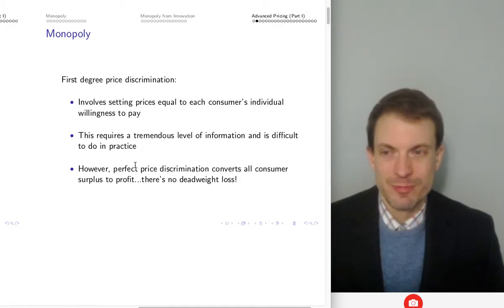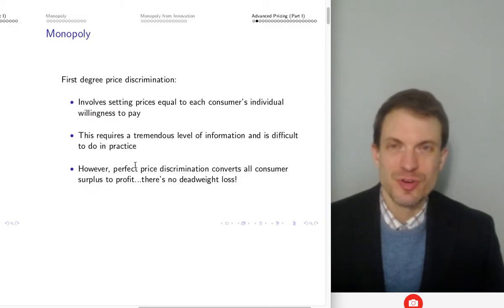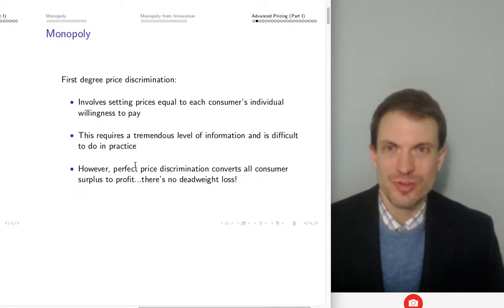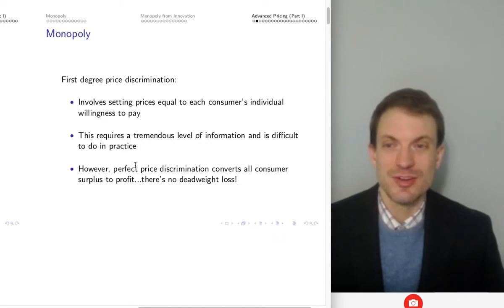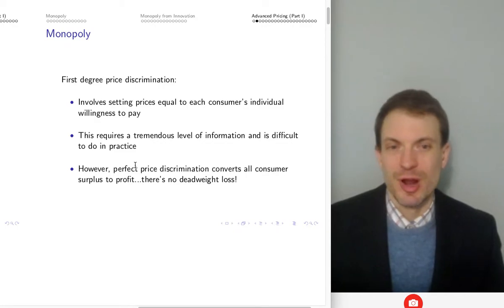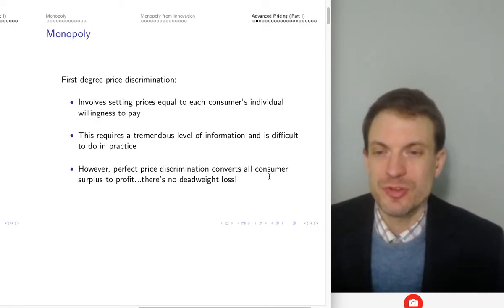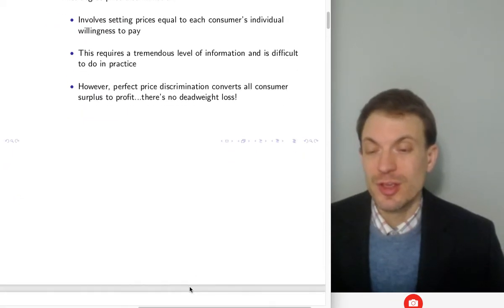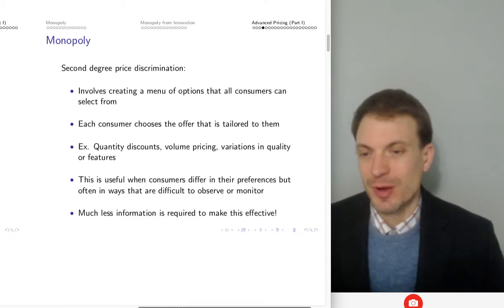In modern day you can come up with pretty compelling technological strategies for first degree price discrimination, though it's not typical. Think about Amazon or Uber — anywhere you're purchasing online, seeing prices, choosing to buy or not buy repeatedly. Through all these interactions the firm is able to glean your willingness to pay and could in principle come up with pretty close first degree price discrimination. What's stopping them? Customer outcry.